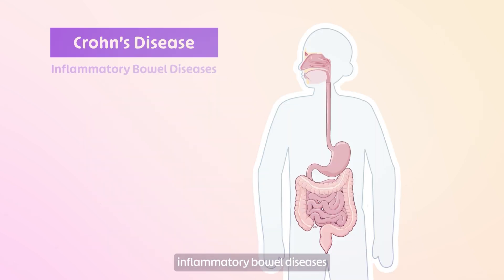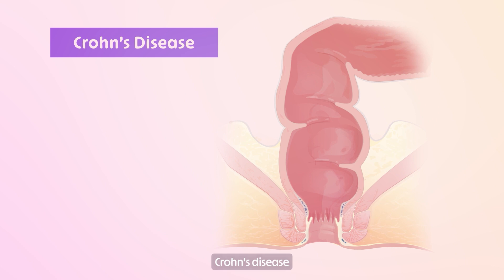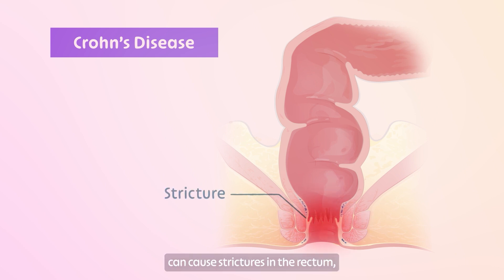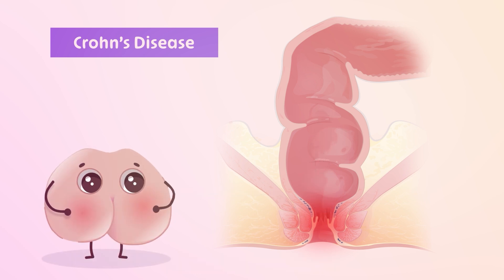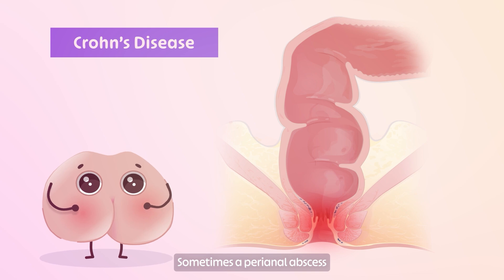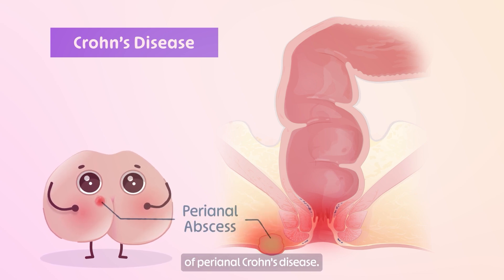Crohn's disease is one of the inflammatory bowel diseases and can affect any sites of the digestive tract. In some cases, Crohn's disease can cause strictures in the rectum, which narrows the rectum and makes passing stool difficult. Sometimes a perianal abscess is the first presentation of perianal Crohn's disease.